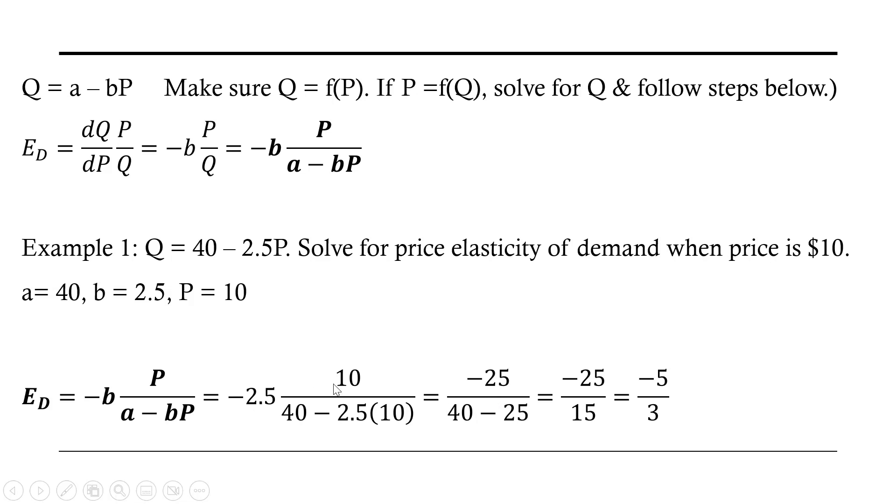Minus 2.5 times 10 is minus 25. 40 minus 25. We get the following here, minus 25 divided by 15, or minus 5 thirds. Let's do another example.